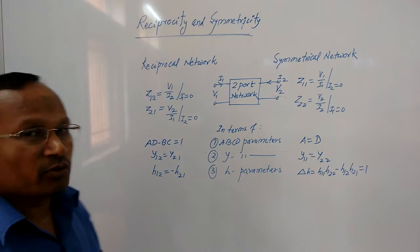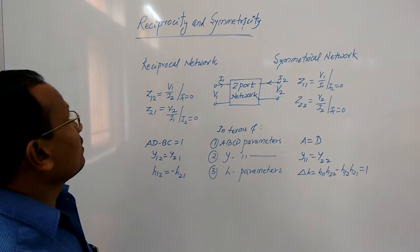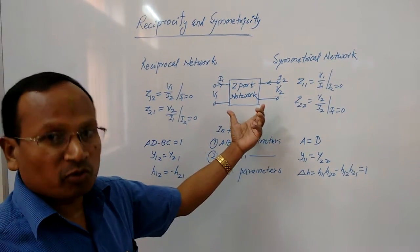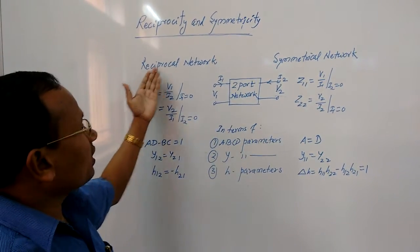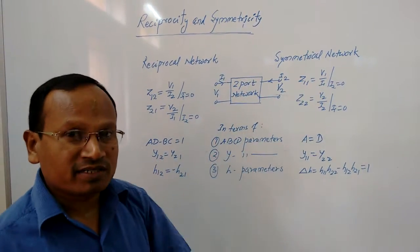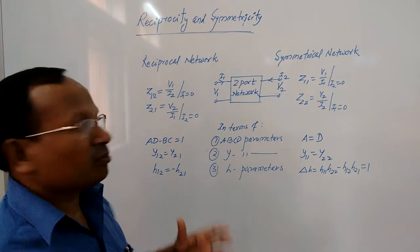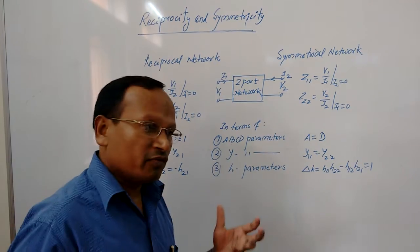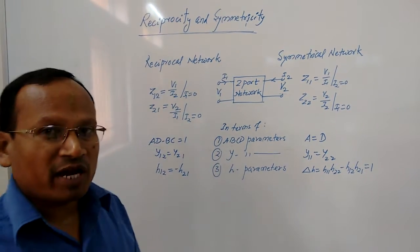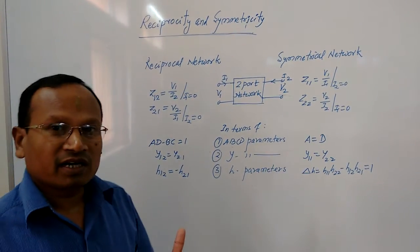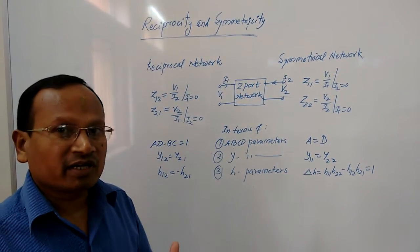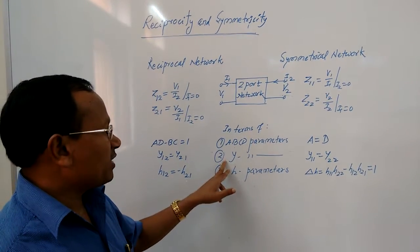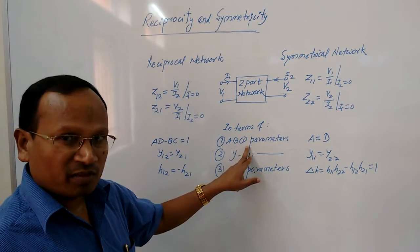In order to understand whether a two-port network is reciprocal or symmetrical, we need to understand its properties in terms of various two-port parameters. As we know, there are mainly four types of two-port parameters: Z parameters, Y parameters, H parameters, and ABCD parameters.